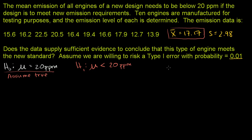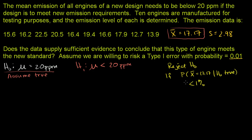We will reject our null hypothesis if the probability of getting a sample mean of 17.17, given the null hypothesis is true, is less than 1%. By doing it this way, there will be less than a 1% chance that we are making a type 1 error — that is, rejecting the null hypothesis even though it is true.